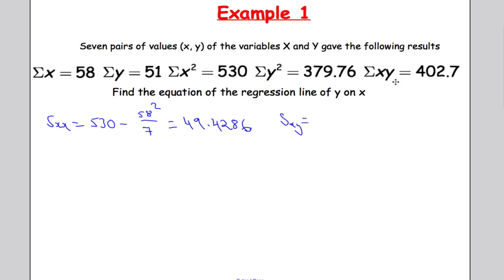Now sxy is given by the sum of xy which is 402.7 minus the sum of the x's times by the sum of the y's, 58 times by 51 all divided by 7. So let's pop that into the calculator.